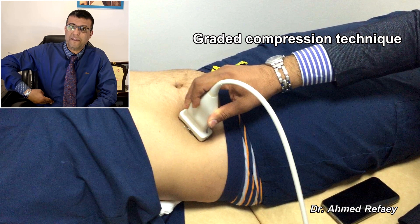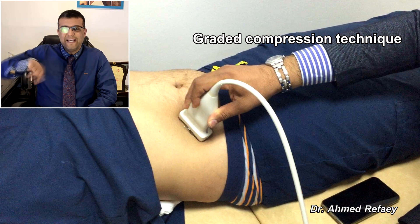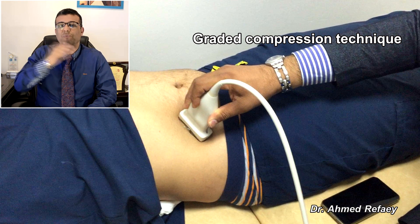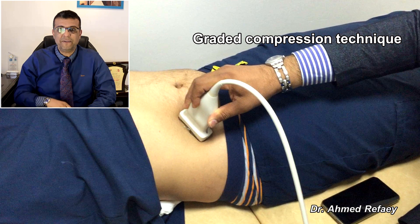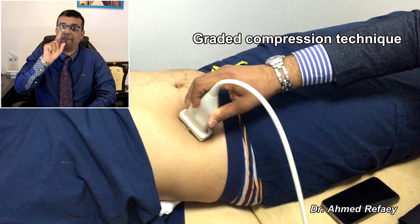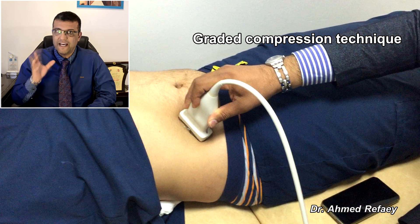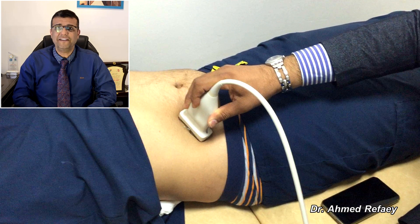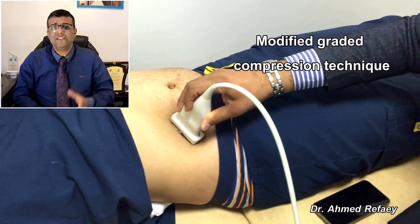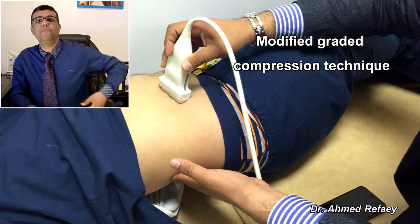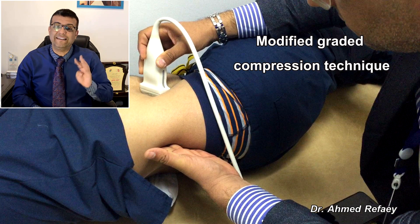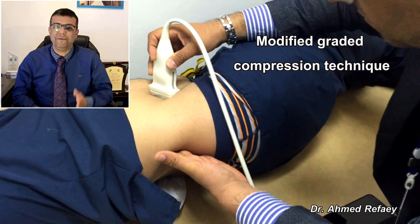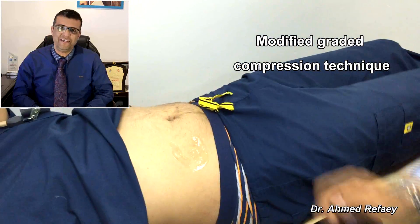By applying gradual pressure with the probe, the underlying gas-containing bowel loops which cover the inflamed appendix start to move away, leaving the inflamed appendix — which is usually fixed due to surrounding inflammatory changes — exposed directly to the probe, separated only by the anterior abdominal wall muscles. This is the graded compression technique. The modified graded compression technique involves forced extrinsic compression of the opposite side of the right lower quadrant using the palm or forefingers of the left hand, allowing more reduction of the distance between the inflamed appendix and the transducer.